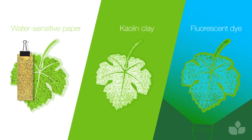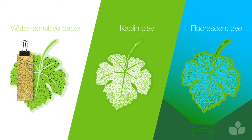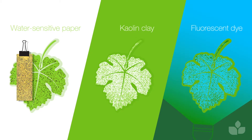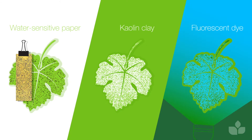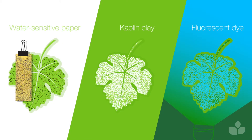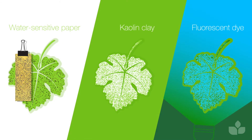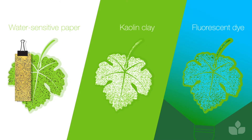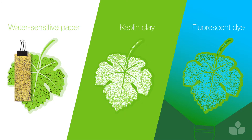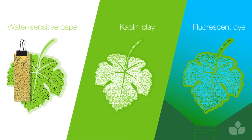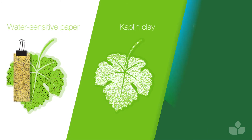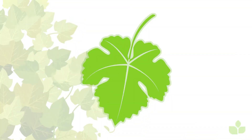Water sensitive paper, kaolin clay, or fluorescent dye can be used to assess the evenness of coverage throughout the canopy. However, direct visual observation of the canopy immediately after spraying is necessary to estimate the point of runoff.